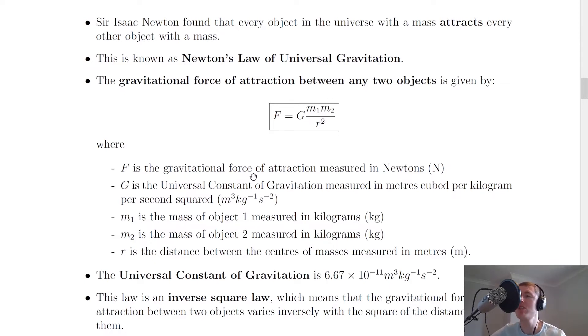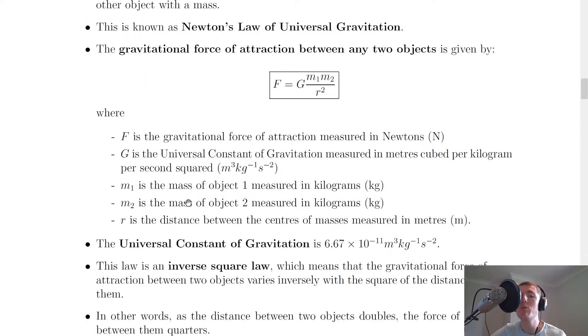Where F is the gravitational force of attraction measured in newtons, G is the universal constant of gravitation measured in meters cubed per kilogram per second squared, m1 is the mass of object 1 measured in kilograms, m2 is the mass of object 2 measured in kilograms, and r is the distance between the center of masses measured in meters.